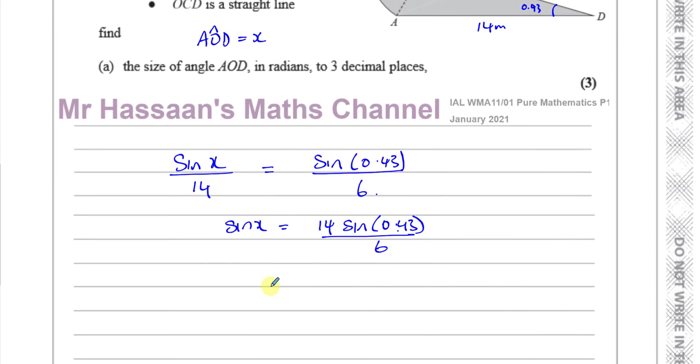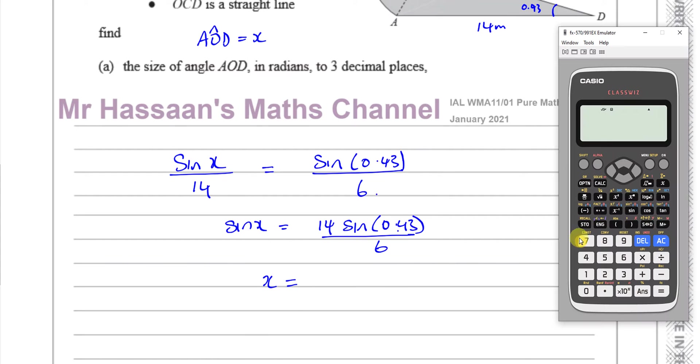So, we can say that sine X is 14 times the sine of 0.43 radians over 6. Therefore, we can find what X is. We have inverse sine of 14, sine 0.43 divided by 6. This is in radian mode. I press equals and it will give me an angle. And the angle is 1.3365.